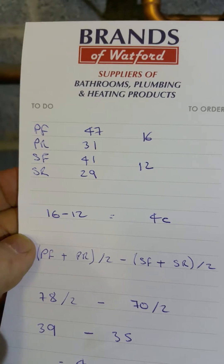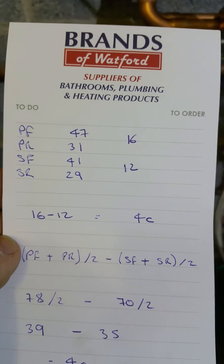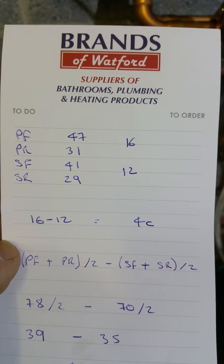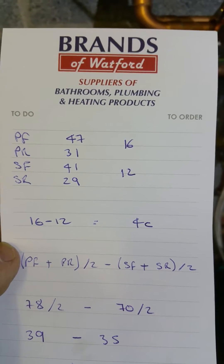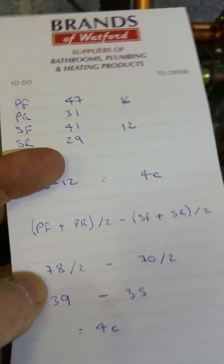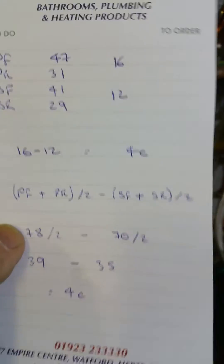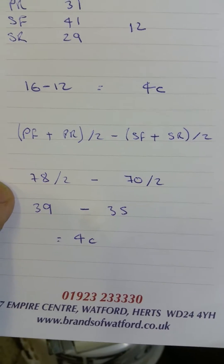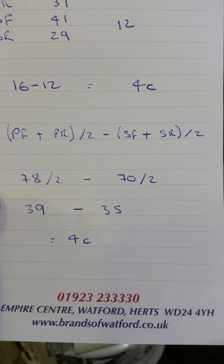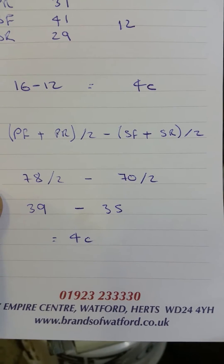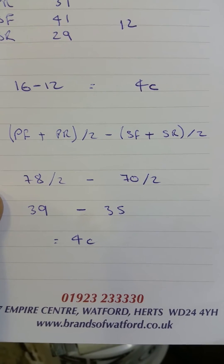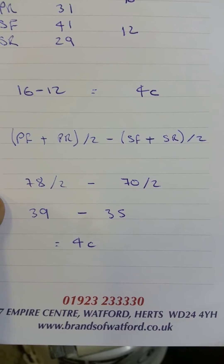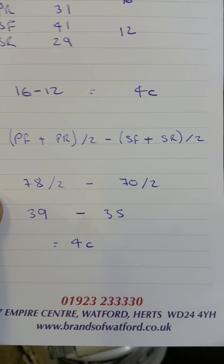I tried a calculation — I haven't studied this further — but 16 minus 12, which is the difference between the delta Ts, came up with a difference of 4 degrees centigrade. I wasn't sure if it's the same principle as the actual formula from the book, which is: primary flow plus primary return divided by 2, minus secondary flow plus secondary return divided by 2.